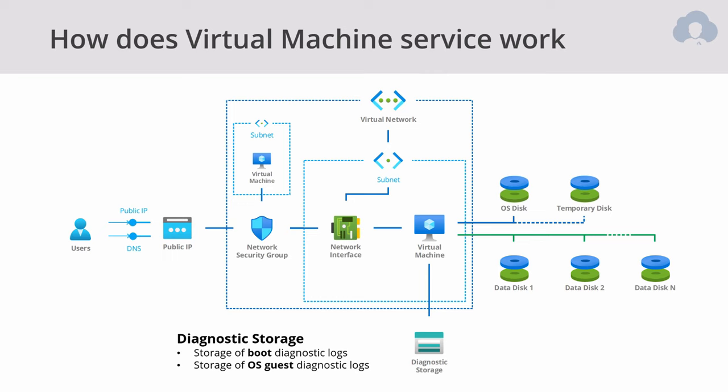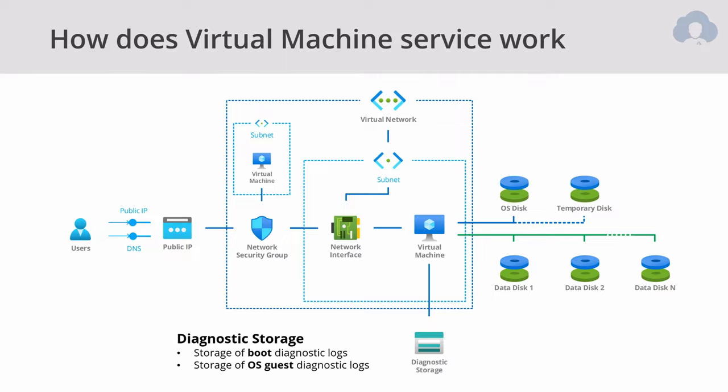There are quite a lot of resources created when creating a virtual machine, but most of them are simple in use case. Key features of a virtual machine include: you can have both Windows and Linux OS, you can use extension and automation options — there are many of those in Azure to configure virtual machines even without logging in. You can do custom images — pre-build an image and use that as a starting point for new virtual machines. You can configure high availability and have rich monitoring capabilities. The three most important high-availability options are availability sets, availability zones, and scale sets.